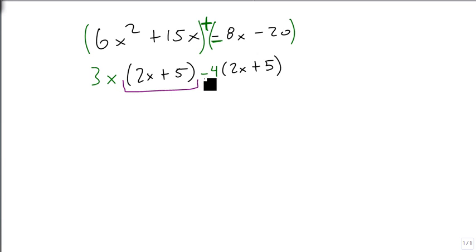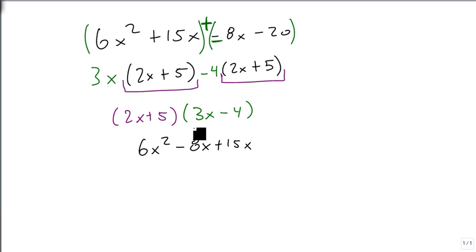This then just gives us our repeated piece, the 2x plus 5, and the piece that's left behind is 3x minus 4. We go ahead and check our answer: 2x times 3x is 6x squared, 2x times minus 4 is minus 8x, 5 times 3x is plus 15x, and 5 times minus 4 is minus 20. Notice we're back to our original once we switch the middle 2.